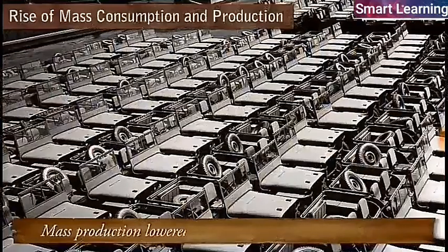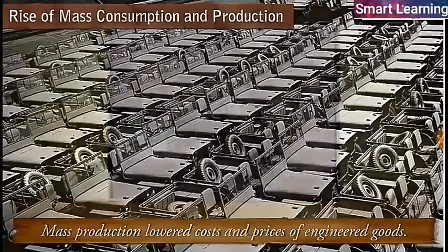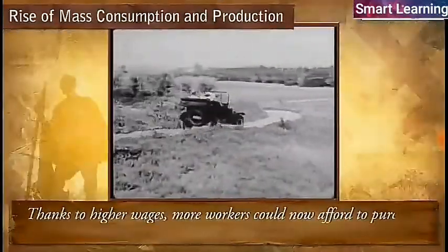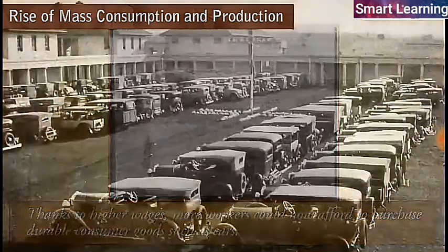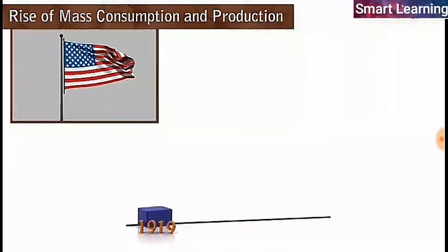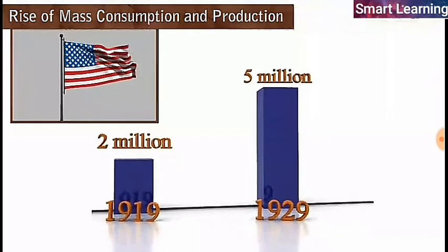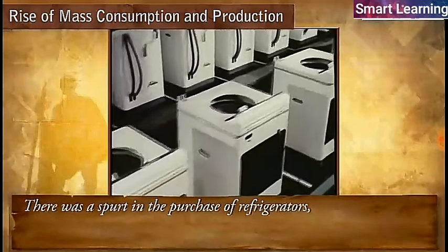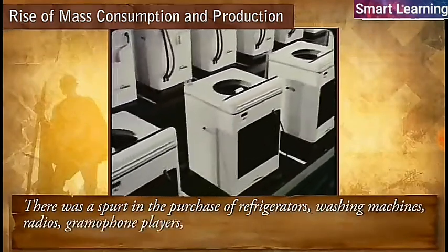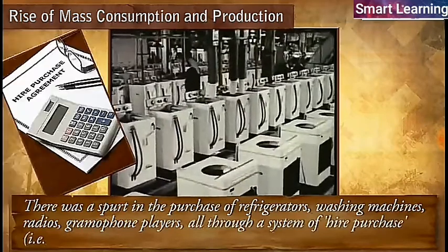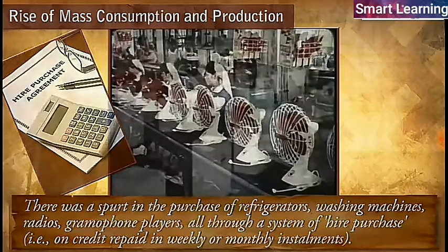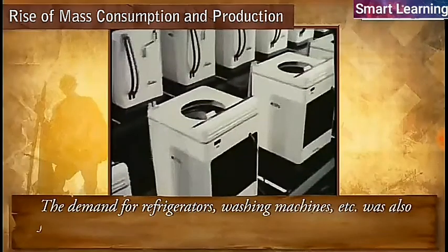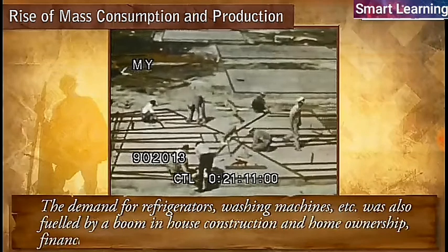Mass production lowered the costs and prices of engineered goods. Thanks to higher wages, more workers could now afford to purchase durable consumer goods such as cars. Car production in the US rose from two million in 1919 to more than five million in 1929. Similarly, there was a spurt in the purchase of refrigerators, washing machines, radios, and gramophone players — all through a system of hire purchase, that is, on credit repaid in weekly or monthly installments. The demand for refrigerators, washing machines, etc. was also fueled by a boom in house construction and home ownership, financed once again by loans.